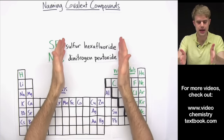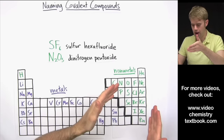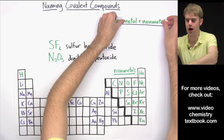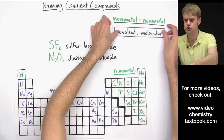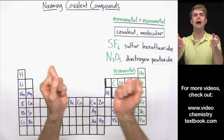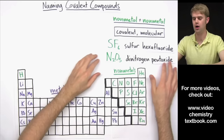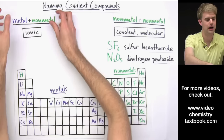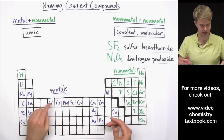Let's look at how to write names for compounds made of two nonmetals. The nonmetals are the elements to the right of the staircase on the periodic table. Compounds made of two nonmetals are called covalent or molecular compounds, because the elements in them are held together by covalent bonds in groups called molecules. This is different from ionic compounds, which contain a metal and a nonmetal.